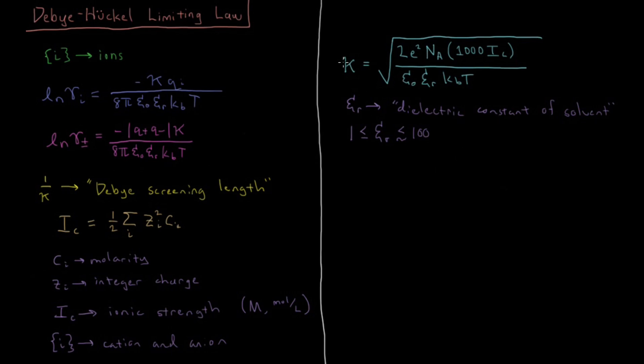So we've talked about that. As we can see here, kappa, and thus the log of our activity coefficient, is going to depend on the square root of the ionic strength. Kappa, which appears in our equation for our activity coefficients, is proportional to the square root of the ionic strength. The ionic strength is approximately proportional to the concentration or the molarity of our ions. So kappa is proportional to the square root of our concentration.